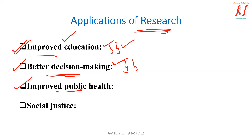Improved public health. With the help of research we can drive organizations and access data and information, and if there is something lacking, we can take care of that. Research plays a very effective part in social justice as well — we can collect data and with the help of research provide equal opportunities to all.